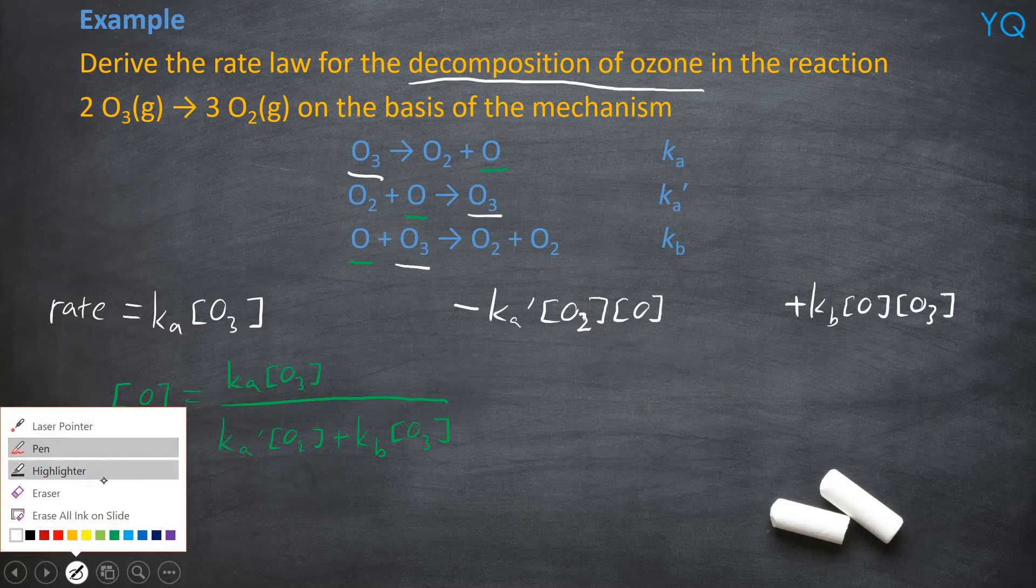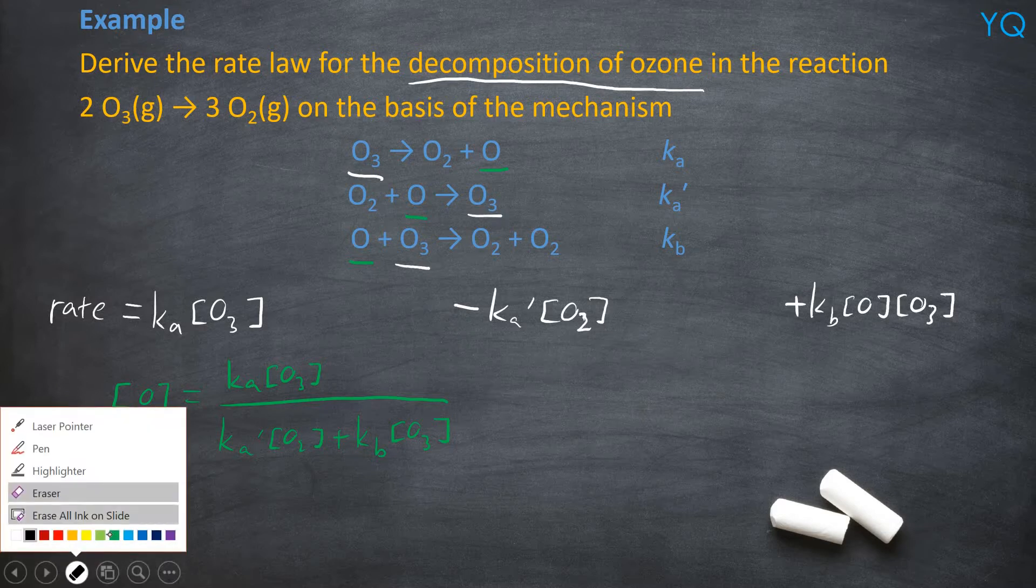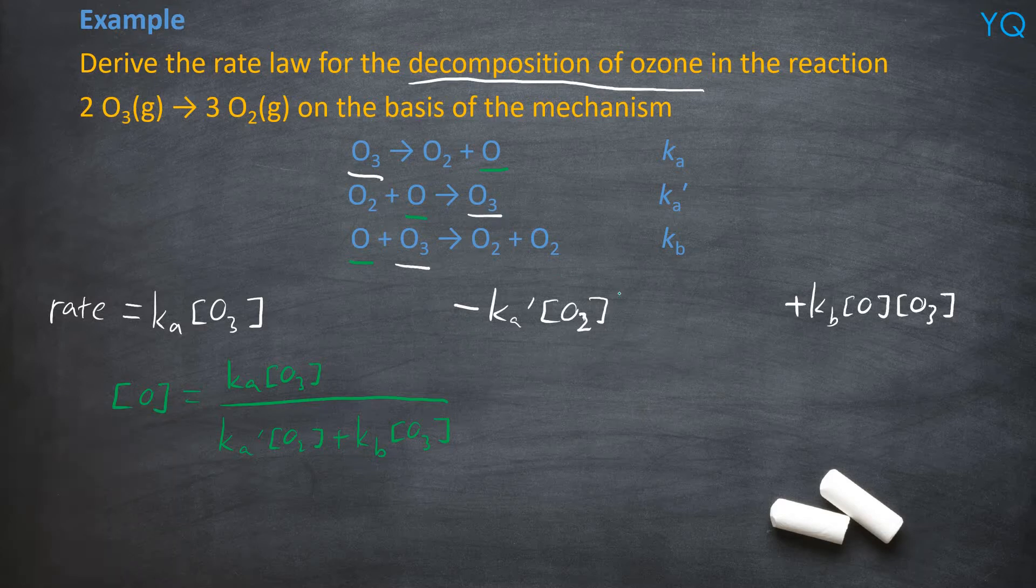So basically, substitute all of these O's into the green one. Okay. So let me just substitute it. So O. You erase it off. It will become Ka times Ka times O3 divided by Ka prime O2 plus Kb O3. The same thing for this one.